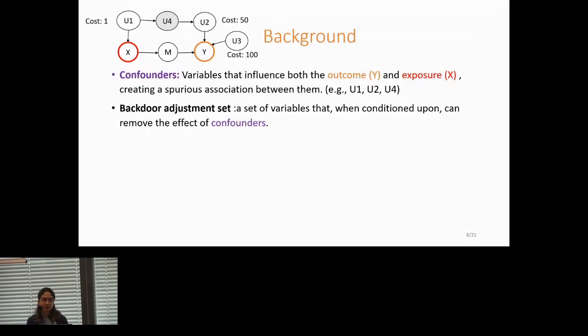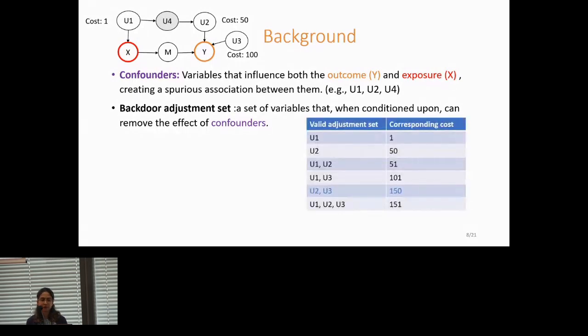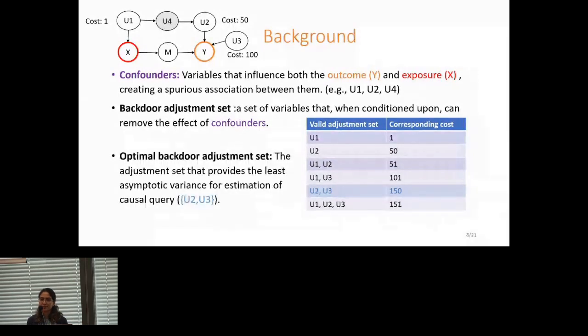For any biomolecular network, like the example that you can see above, we can have several valid adjustment sets. If we pick any of them, and if we condition upon any of them, we will block the effect of confounders, and we will be able to have an unbiased estimate of the query. But note that different adjustment sets have different experimental costs associated with them. The adjustment set that provides the least asymptotic variance in terms of estimating the query is called the optimal.